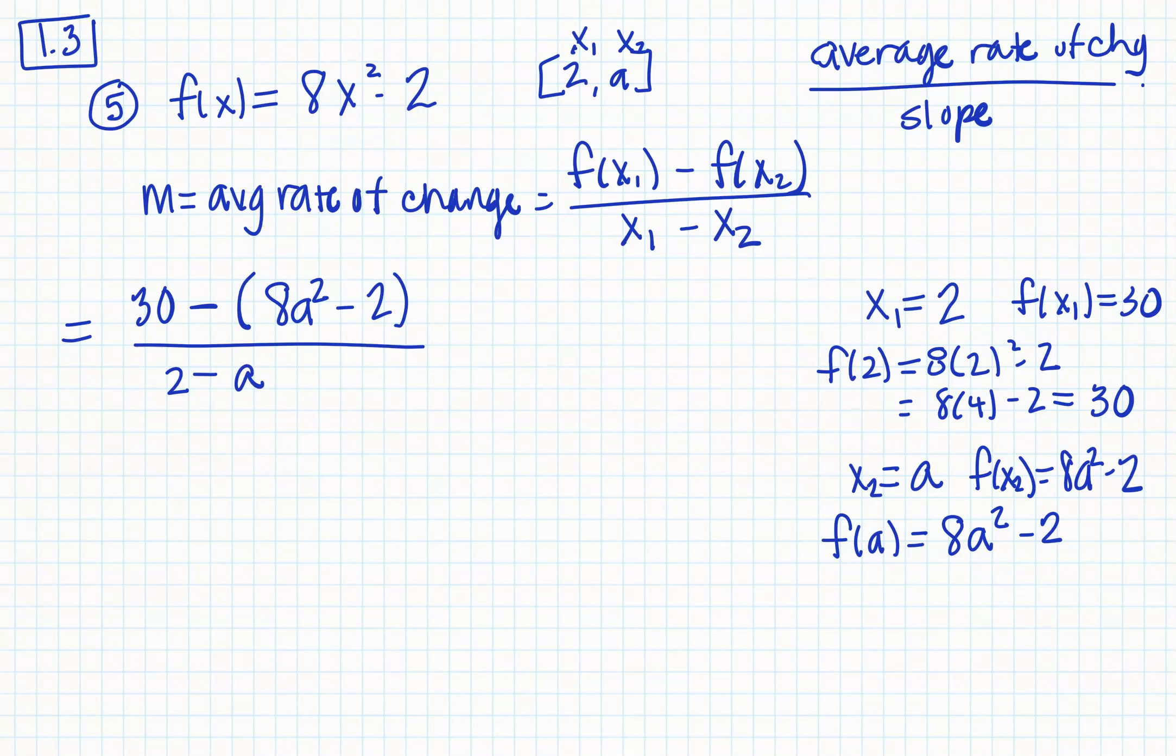So I'm going to distribute this negative throughout, so it gives me 30 minus 8a squared plus 2 all over 2 minus a. I'm going to put that 30 and that 2 together, so it gives me 32 minus 8a squared all over 2 minus a.